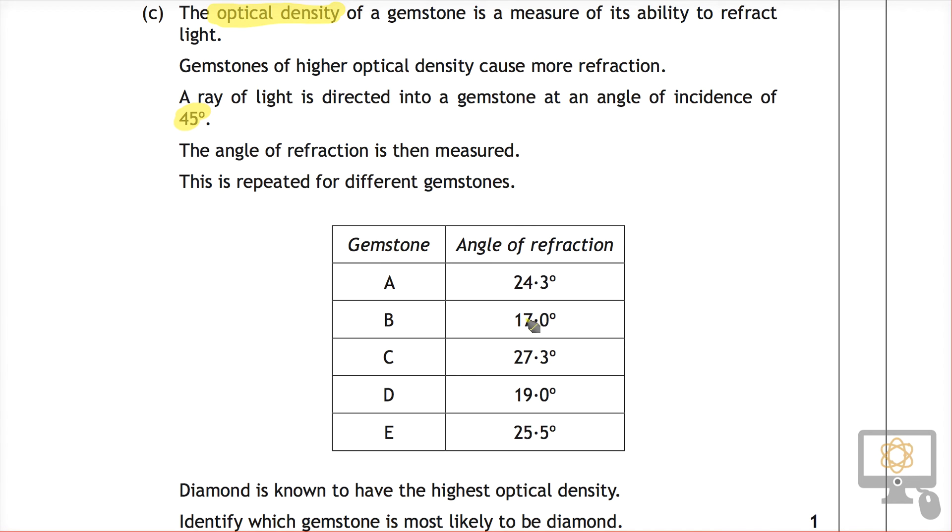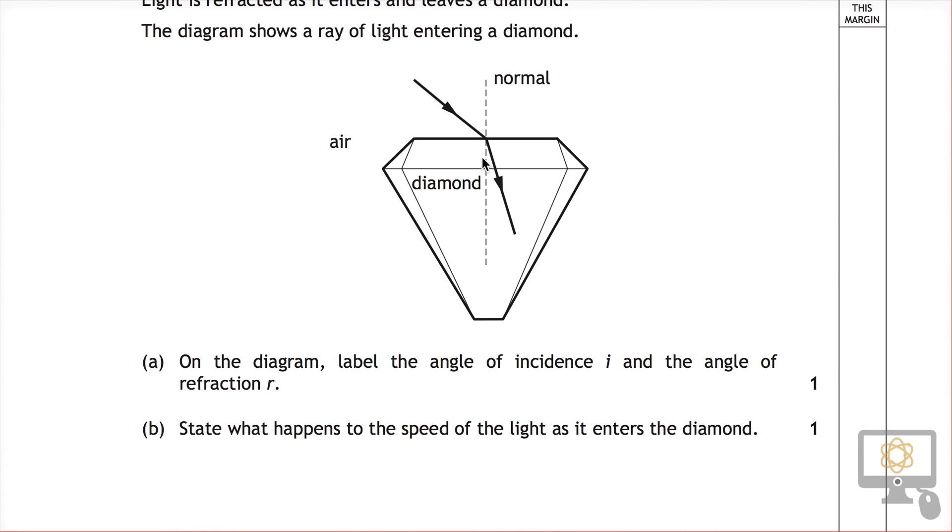So that means it's either going to be the biggest number or the smallest number. Let's just go back up and have a look at the rest of the diagram. When light enters glass or diamond it bends toward the normal. The more it bends, the smaller this angle in here becomes.